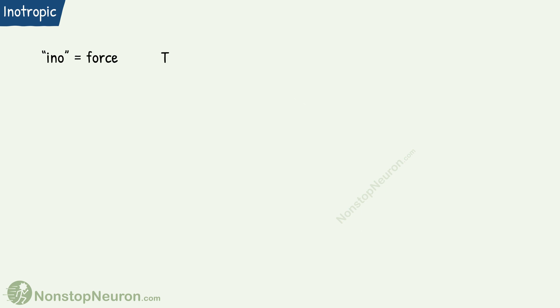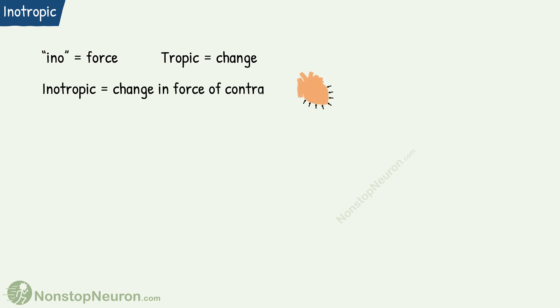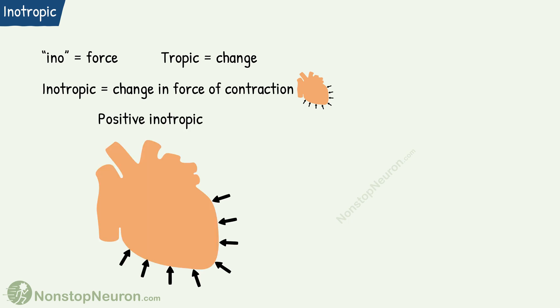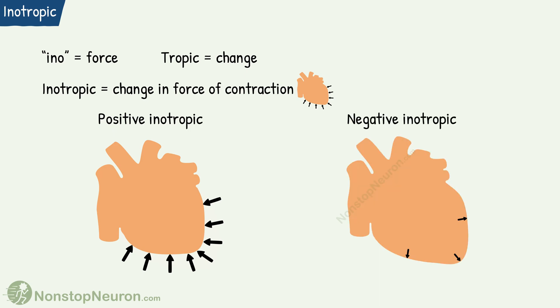Next, we have inotropic effects. Ino means force, and tropic means change. So the inotropic effect means a change in the force of contraction. Positive inotropic means an increase in the force of contraction, and negative inotropic means a decrease in the force of contraction.